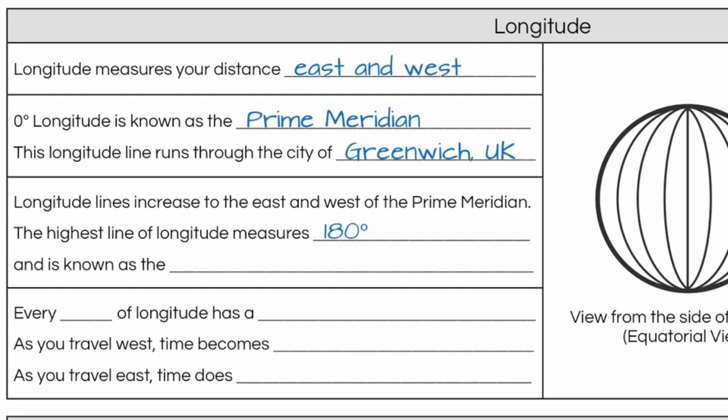Notice this does not have an east or west after it, because there is only one line of 180 degrees longitude. It is known as the international date line. It is on the opposite side of the earth from the prime meridian.